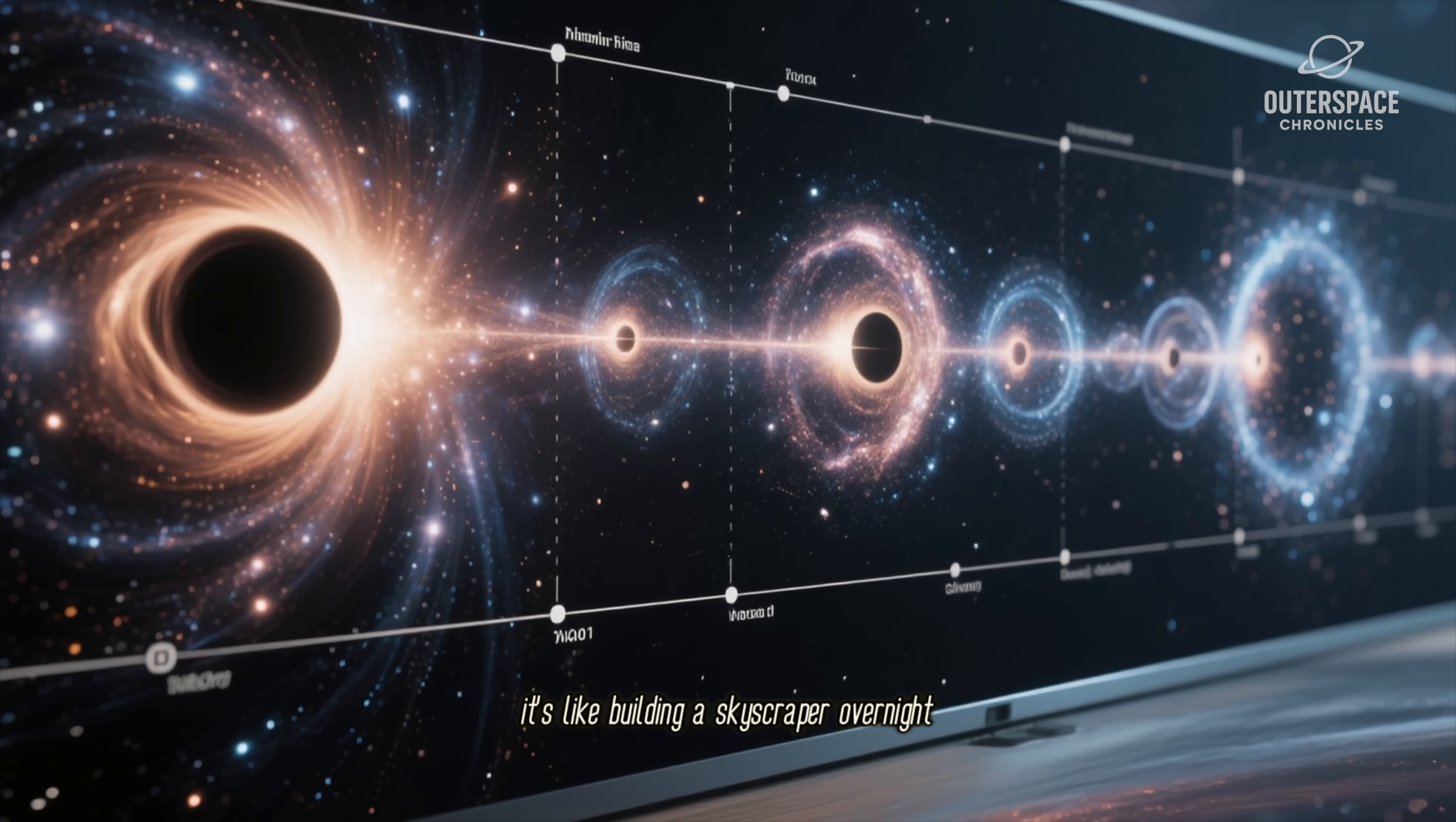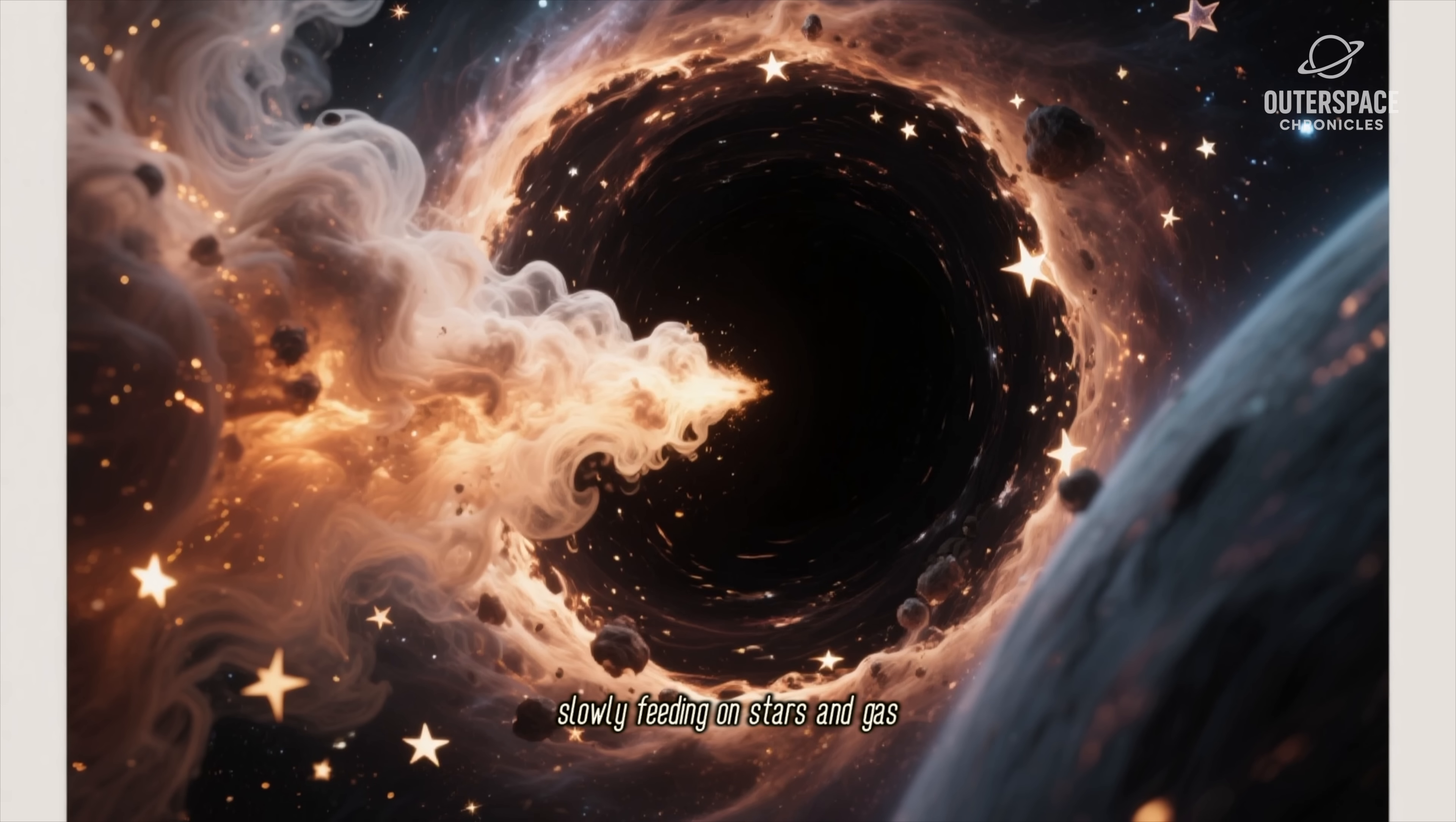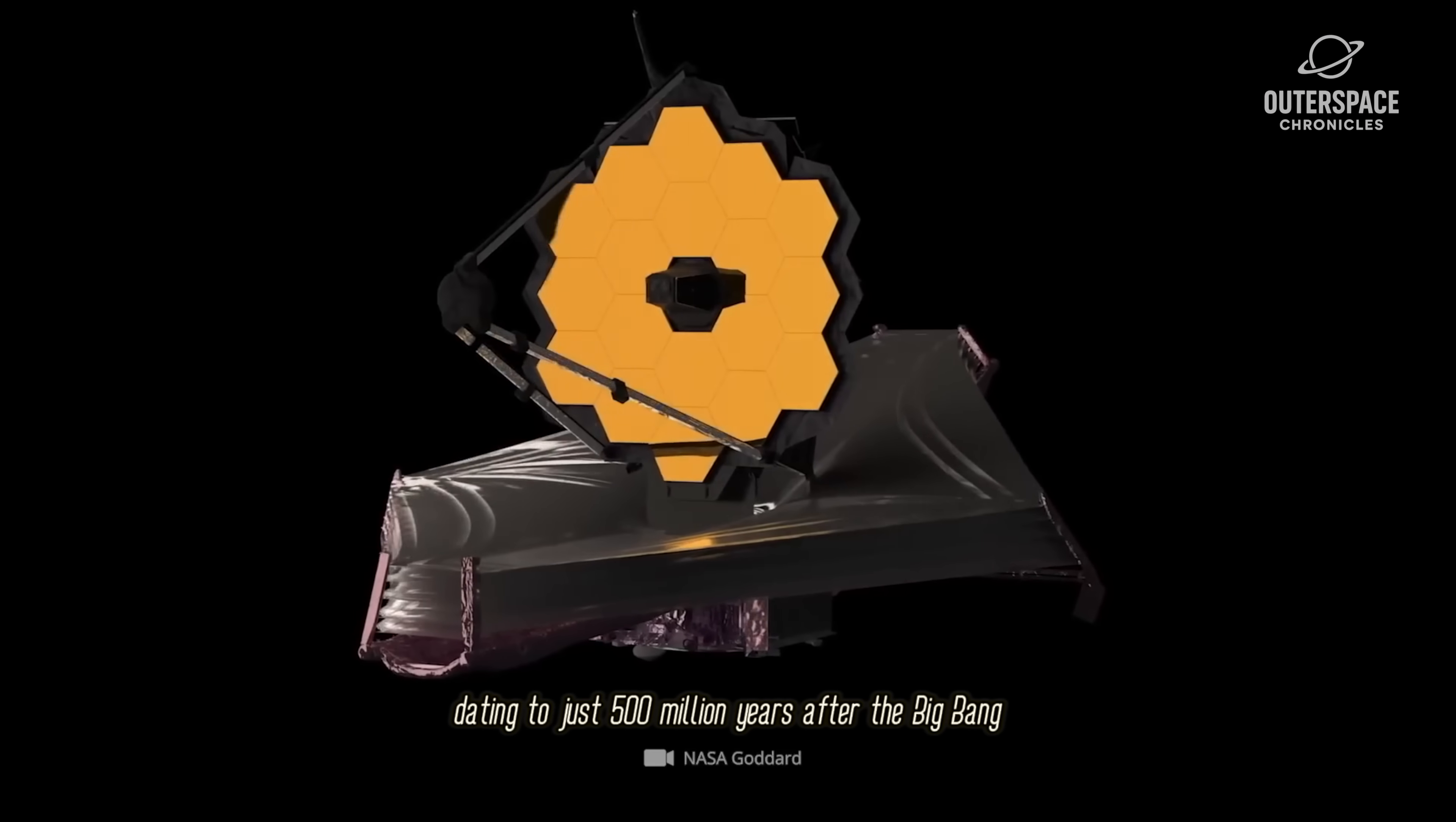We just do not know how to make that happen. The surprises didn't stop then—there were the black holes. Our models said supermassive black holes grow over eons, slowly feeding on stars and gas. But Webb found monster black holes already in place when the universe was shockingly young. An international team using Webb recently confirmed the most distant black hole ever seen, dating to just 500 million years after the Big Bang, discovered inside a little red dot galaxy.